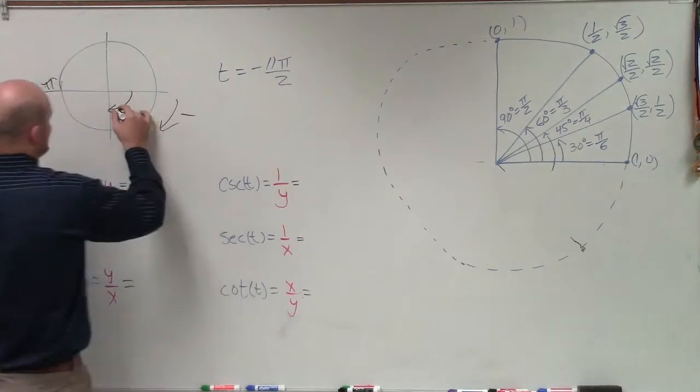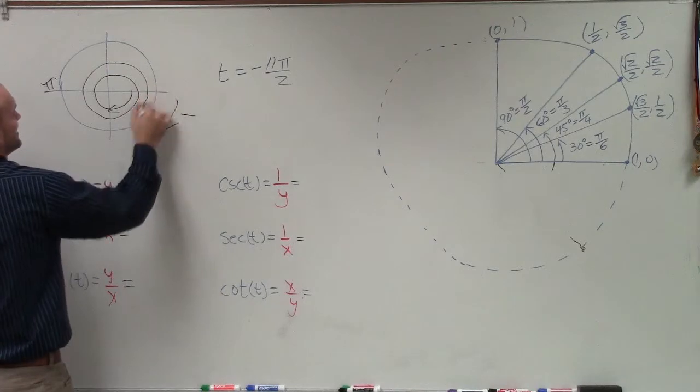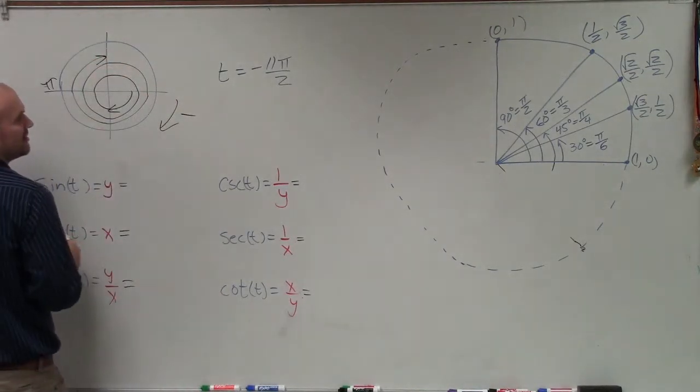and keep adding it up until we get to negative 11. So one pi over 2, two, three, four, five, six, seven, eight, nine, ten, eleven pi over 2. And that's our ending value.